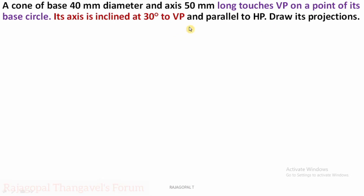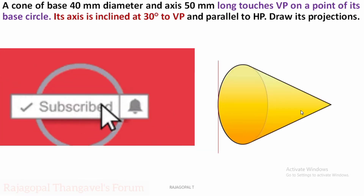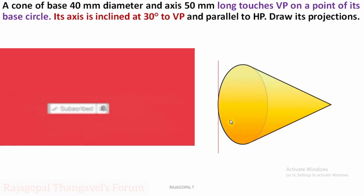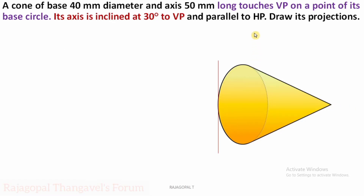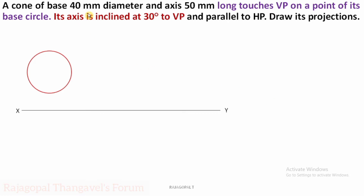Here one point of the base circle is touching the vertical plane. If you see from the front, we can clearly see the entire circle; from the top we can see a triangle. So first we have to proceed with the front view as a circle — the diameter of the circle is 40 mm.